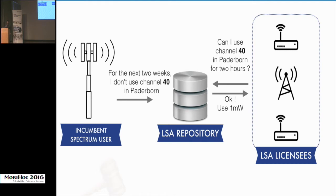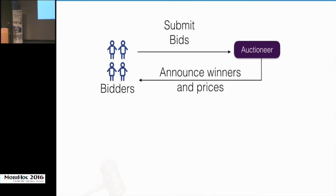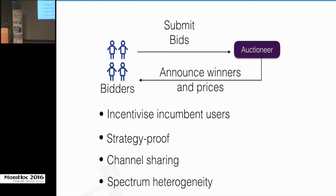To incentivize incumbent spectrum users to release more spectrum, we believe auctions are an effective market mechanism. One of the main objectives is to incentivize incumbents and improve spectrum availability in the secondary market. In a typical auction, bidders submit their bids to the auctioneer, the auctioneer computes winners, and informs bidders of their allocations. These are the properties we believe are important for an auction scheme applied to the LSA market.